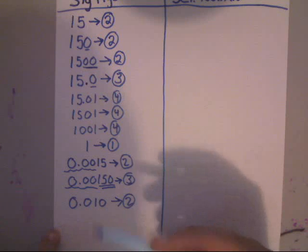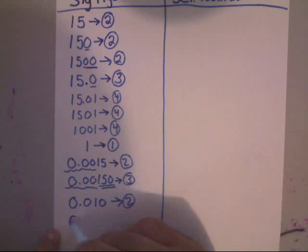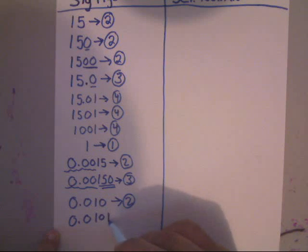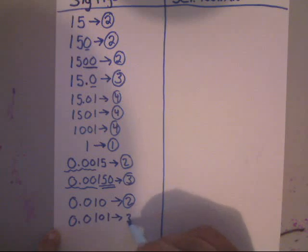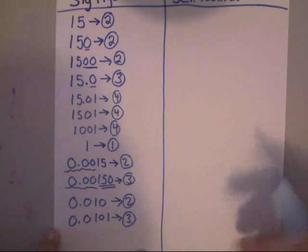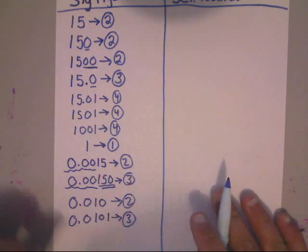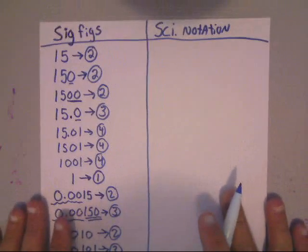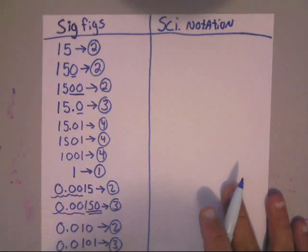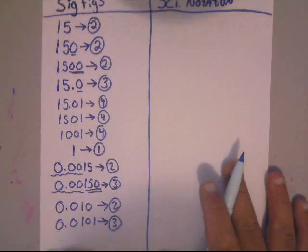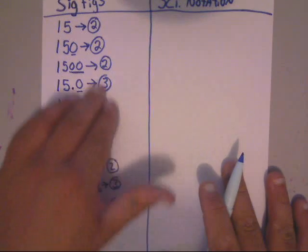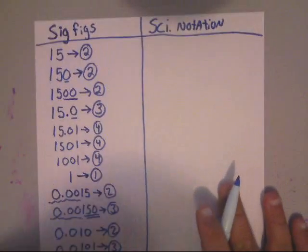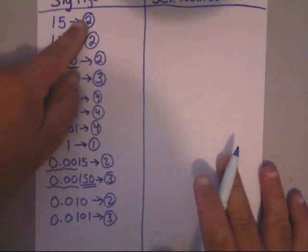Now, let's say you had the number 0.010 — that's two sig figs. It pretty much makes sense once you do a few of these.